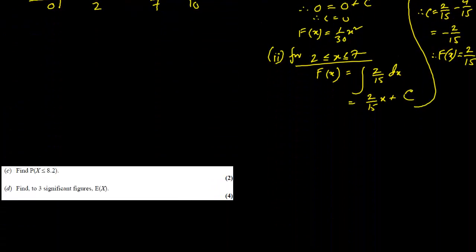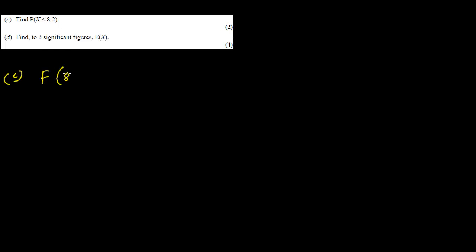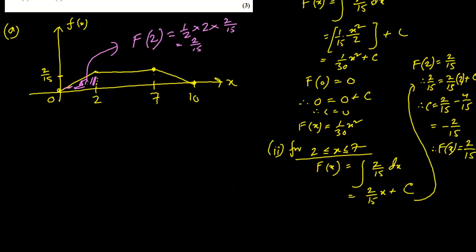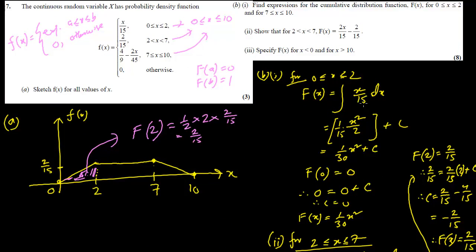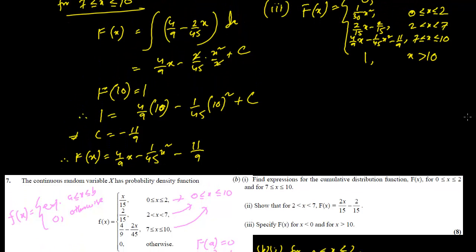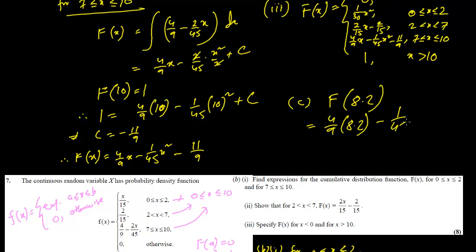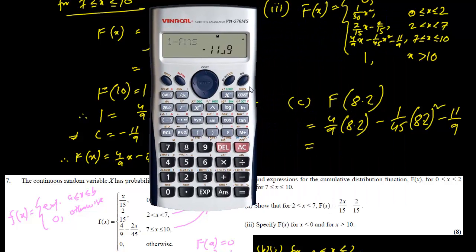For question (c), we need to find P(X ≤ 8.2). Since 8.2 lies in the interval 7 to 10, we use the third CDF expression. F(8.2) = (4/9)(8.2) − (1/45)(8.2)² − 11/9.